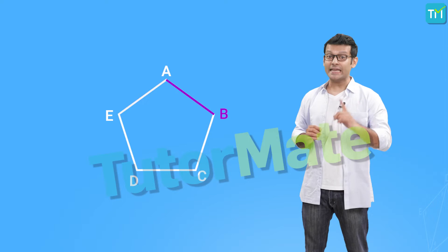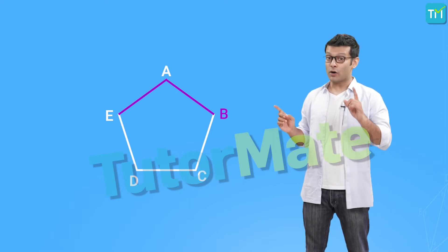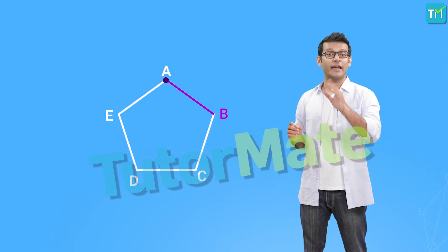AB and AD are also called adjacent sides because they have point A as a common endpoint.